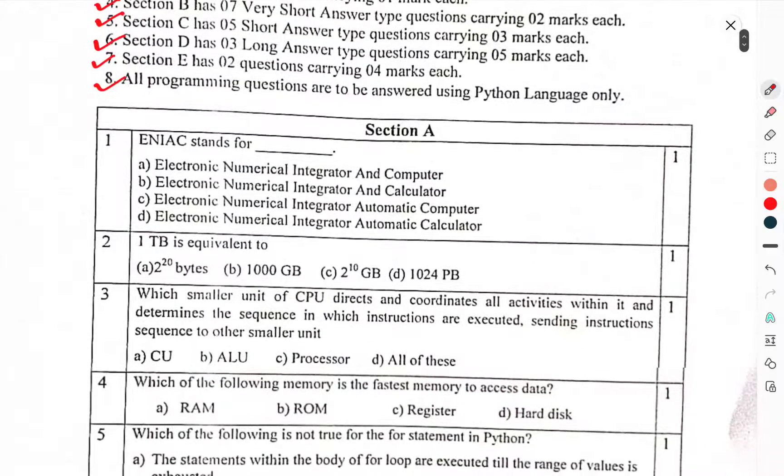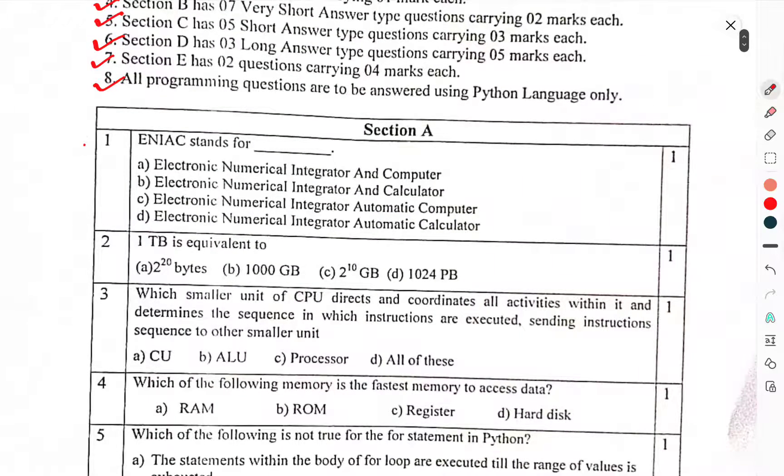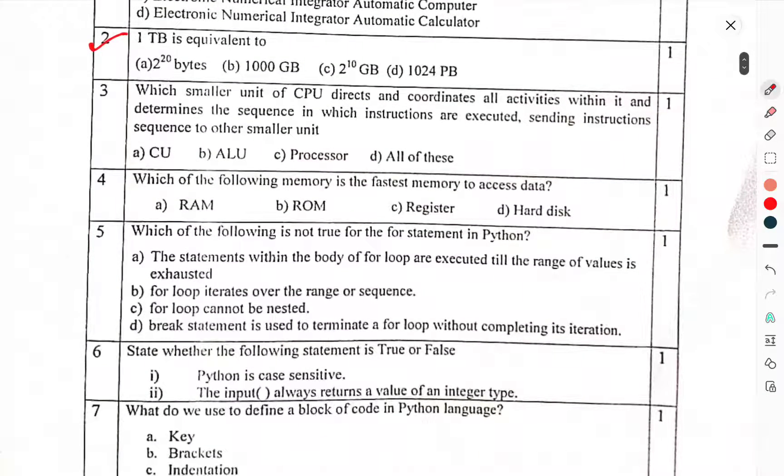First of all, Section A. Question 1: ENIAC stands for. Question 2: 1TB equivalent to. Question 3: Which smaller unit of CPU directs and coordinates all activities within it and determines the sequence with which instructions are executed, sending instructions sequence to other smaller units. Question 4: Which of the following memory is the fastest memory to access data?